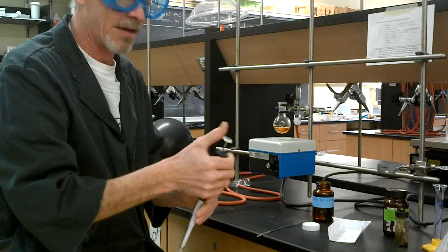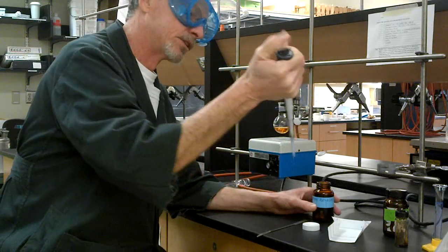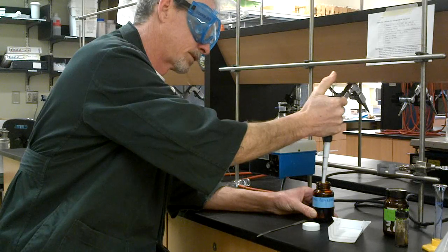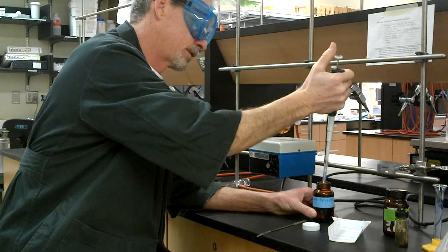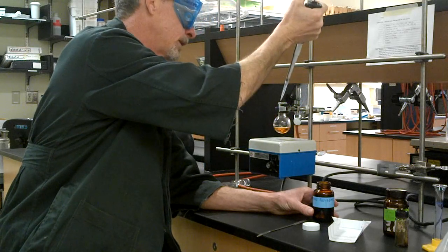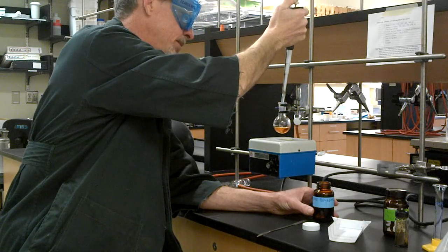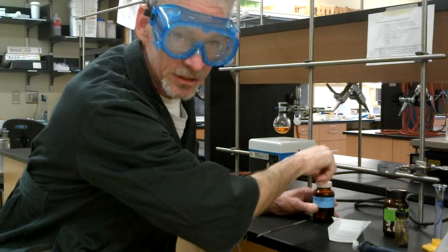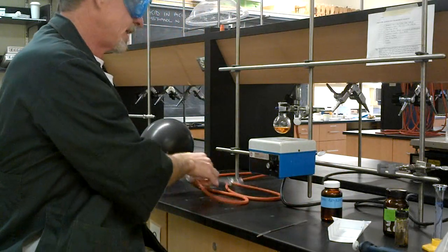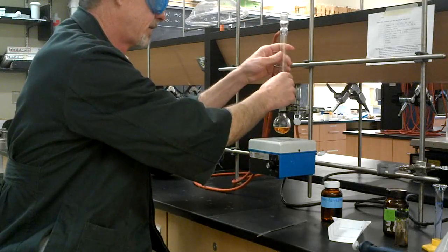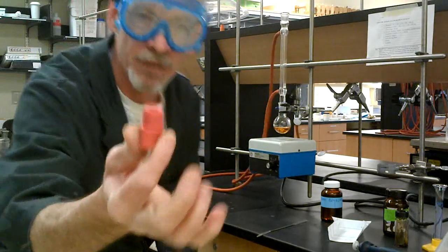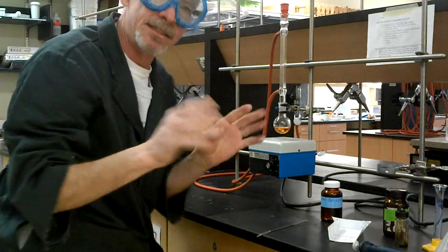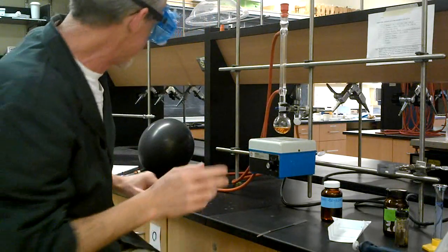And then we have our bromobenzene. So using the Eppendorf, we add one milliliter. You will dispense your reagents in the fume hood please. And then quickly our condenser column and we have a rubber bung for the top.